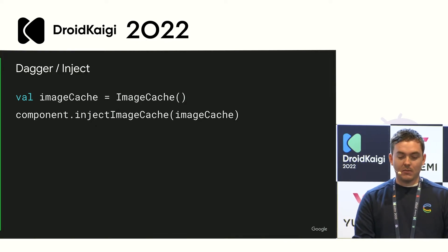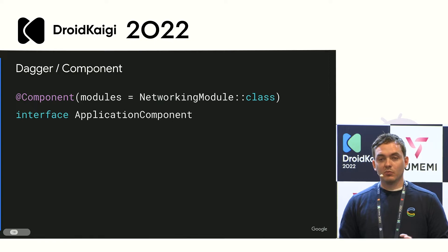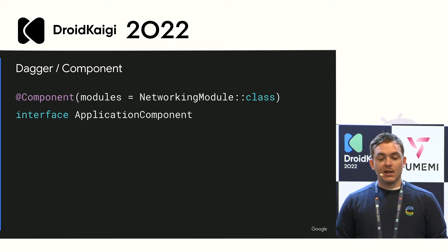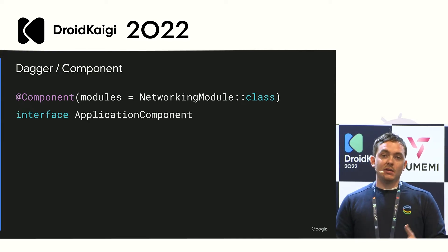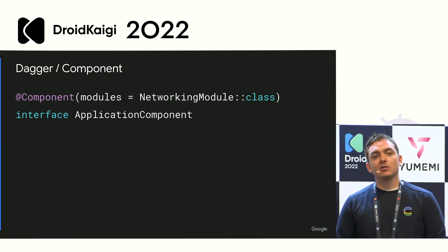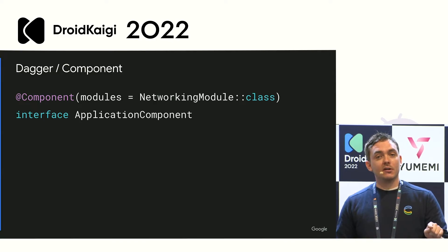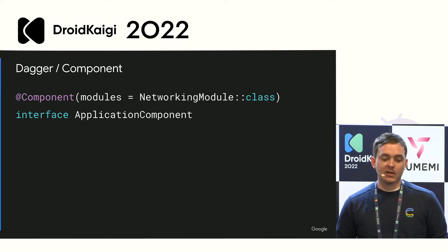Components primarily do two things. They work as factories for creating new objects. We have one called our application component, and it's responsible for creating our image cache. At compile time, Dagger will create a class roughly named Dagger application component — it just appends 'Dagger' to the front. That's the actual implementation of the interface. Whatever methods you put on your component interface, Dagger will try to create those objects if it knows how to.